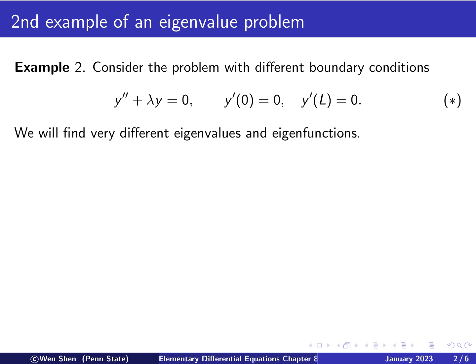We will see that with this change, we will find very different eigenvalues and eigenfunctions. Okay, so we'll still need to discuss the three cases for the different signs of lambda, lambda less than 0, lambda equals 0, and lambda bigger than 0. So let's go into that.